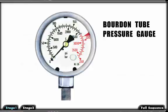Bourdon tube pressure gauges measure the pressure in a system and display it on a calibrated dial. The units of calibration are displayed in PSI, bar, and PSIA.